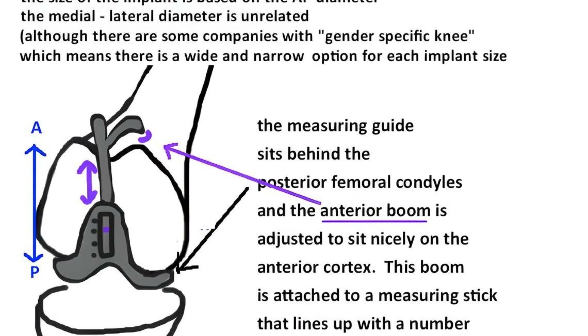There is a 4-in-1 cutting guide for each femur size. Therefore, you first determine the size, then figure out where to place the guide on the distal femur. This is what determines both rotation and flexion gap.